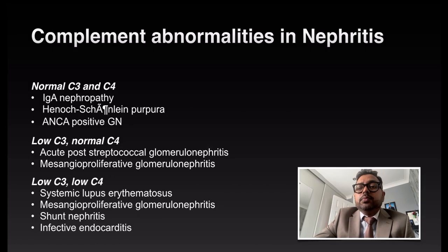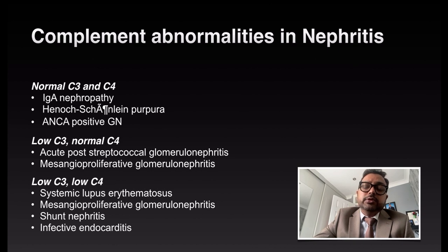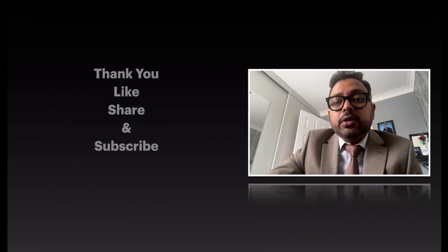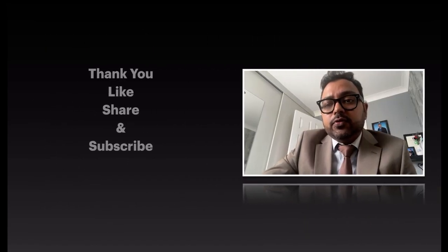Complement abnormalities associated with nephritis: normal C3 and C4 are expected in IgA nephropathy, Henoch-Schönlein Purpura, and ANCA-positive glomerulonephritis. Low C3 with normal C4 is expected in acute post-streptococcal glomerulonephritis and mesangioproliferative glomerulonephritis. Low C3 and low C4 are found in SLE, mesangioproliferative glomerulonephritis, shunt nephritis, and infective endocarditis. I hope you enjoyed the video — please like, share, and subscribe. Thank you very much for your love and support.